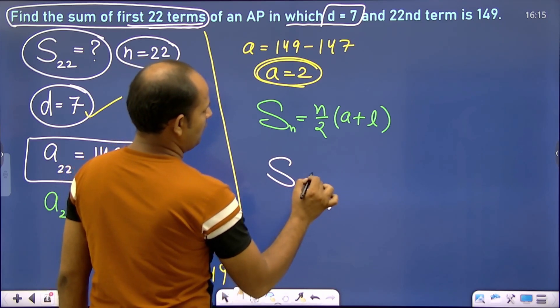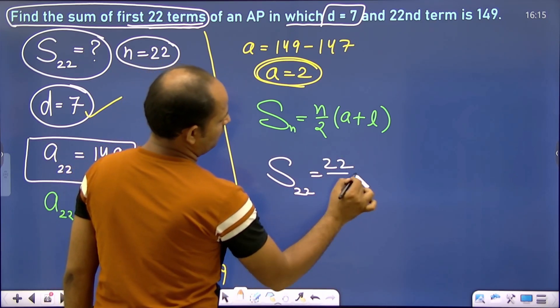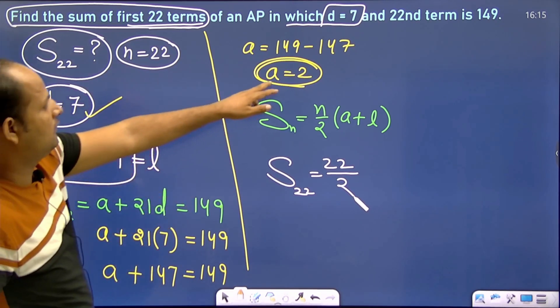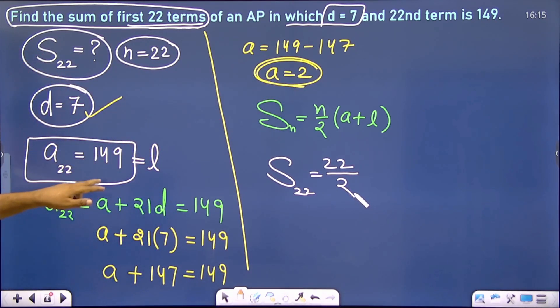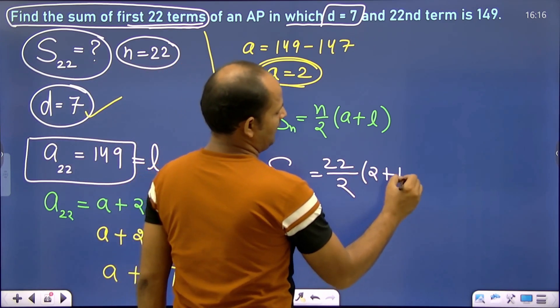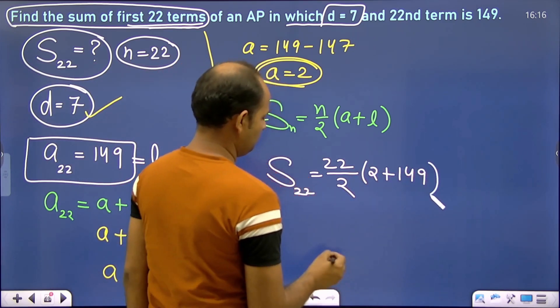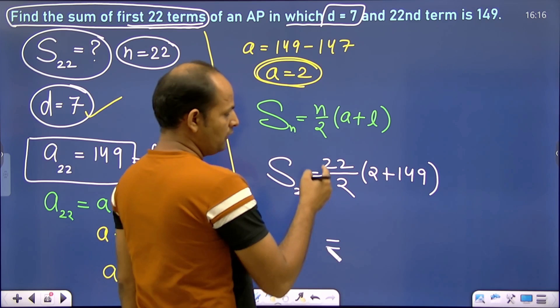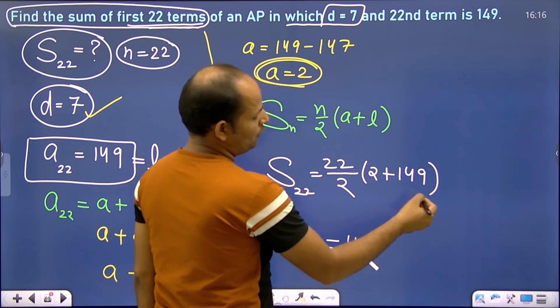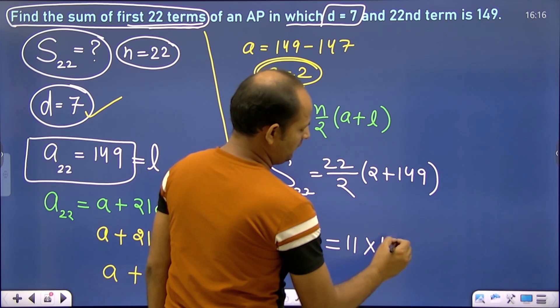a is how much? We just found it: 2. Last term is how much? 149. So 22 divided by 2, when we add them, gives 151.